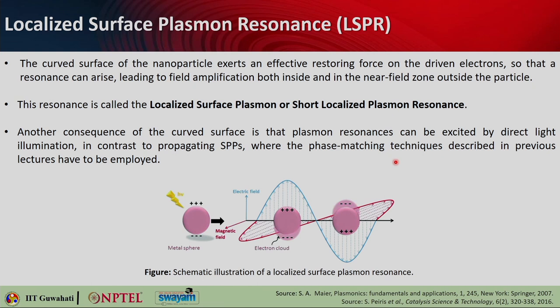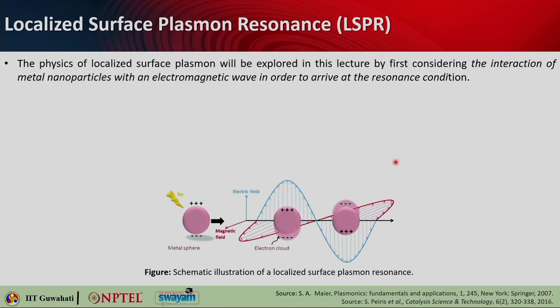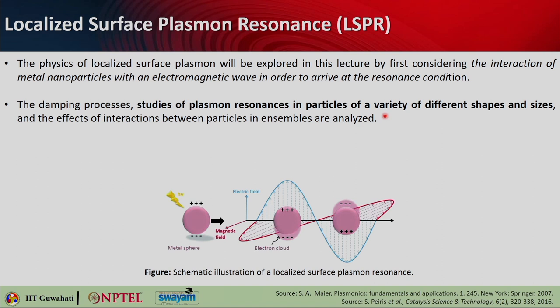One advantage compared to SPPs is that here you do not need to worry about the phase matching condition — you can simply shine light and excite the plasmons. So localized surface plasmons can be excited by direct illumination. The physics will be explored by considering the interaction of metallic nanoparticles with electromagnetic waves, to find how we get to the resonance condition. We will also see the damping process, because whenever there is a resonator there is damping associated, which decides the Q factor. We will see how this damping depends on nanoparticle size and shape and how interactions between particles in an ensemble affect the resonance.